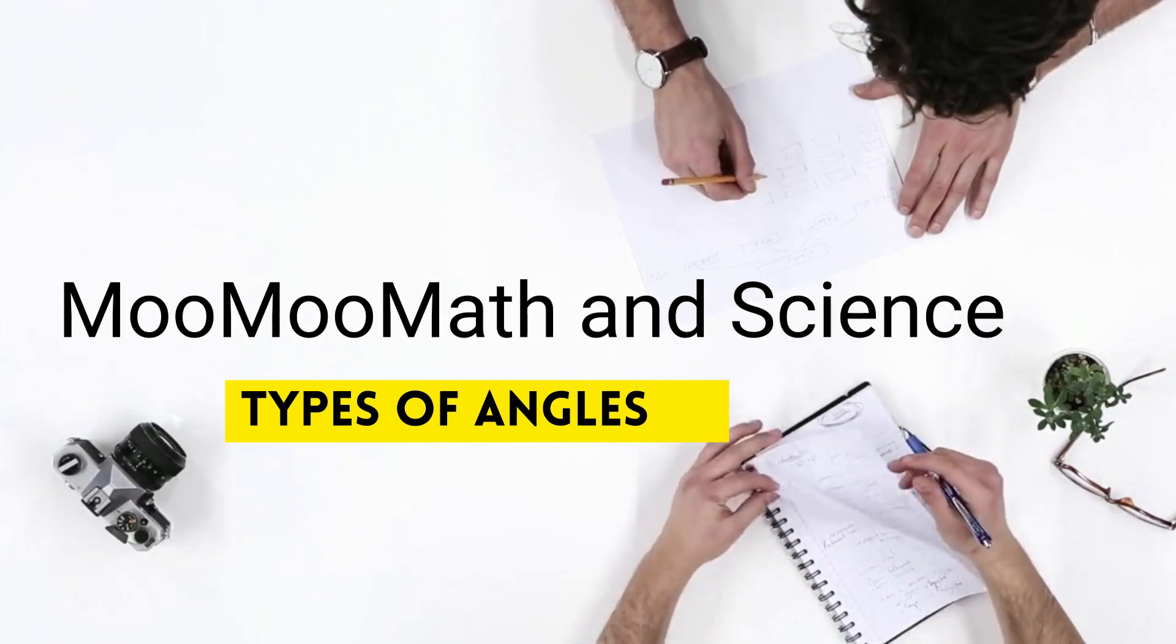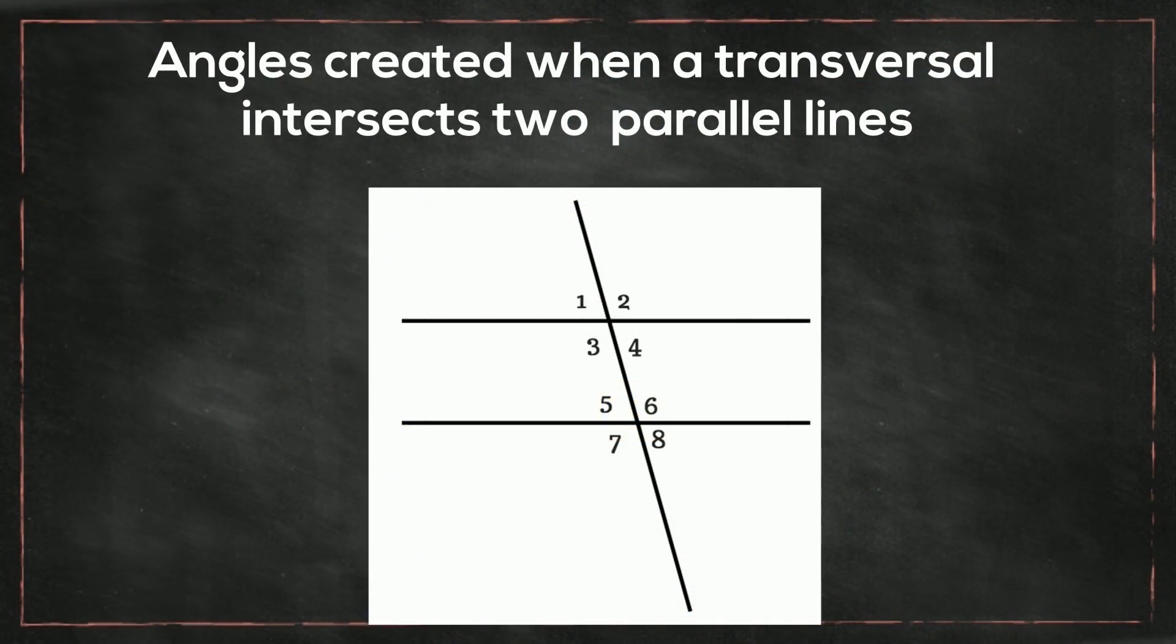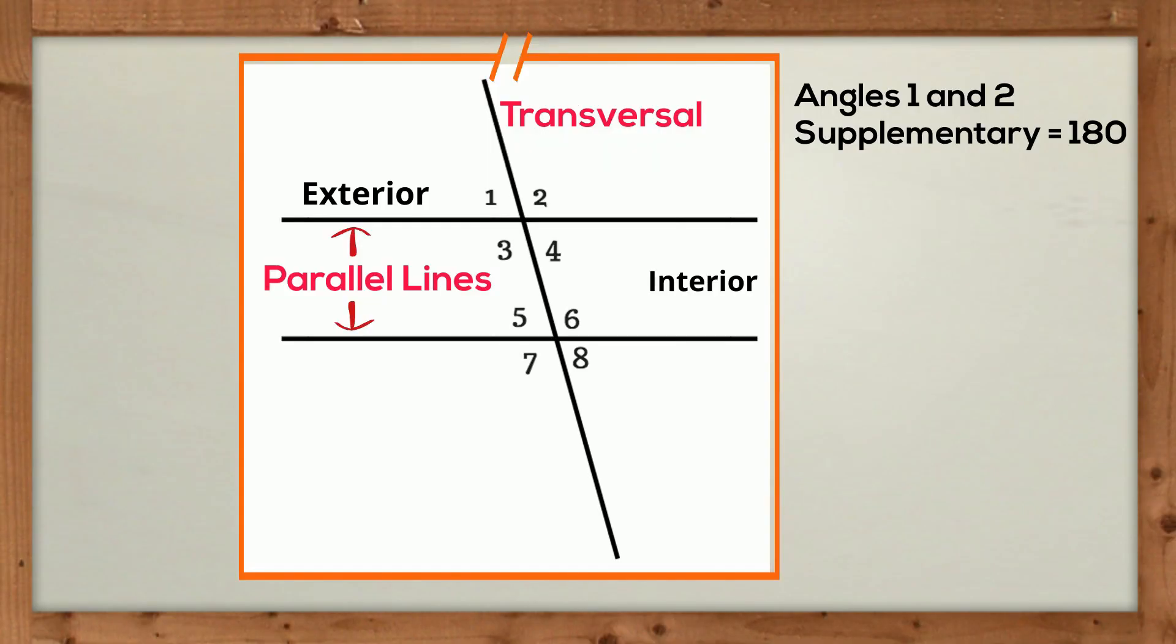Welcome to Moomoo Math and Science. In this video, I'd like to look at angles created when a transversal intersects two parallel lines. We'll first look at the angles and angle pairs and their relationships, and then we'll work a very short problem.